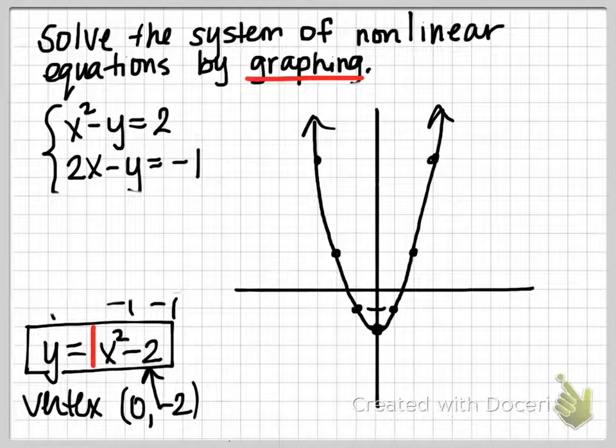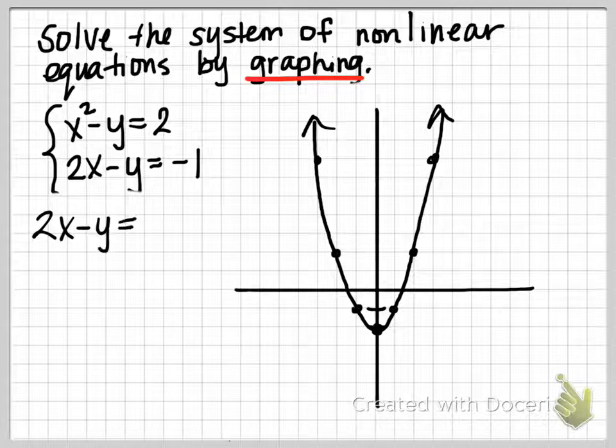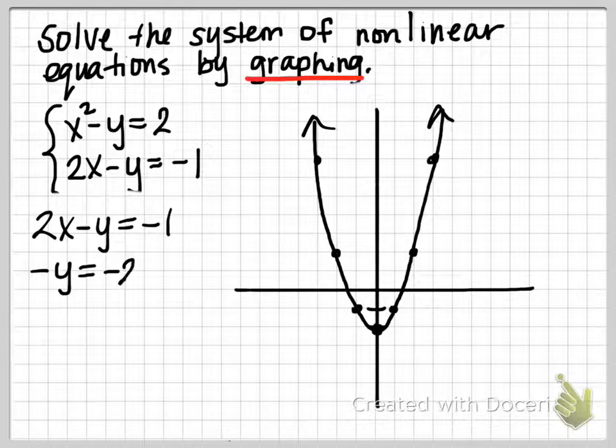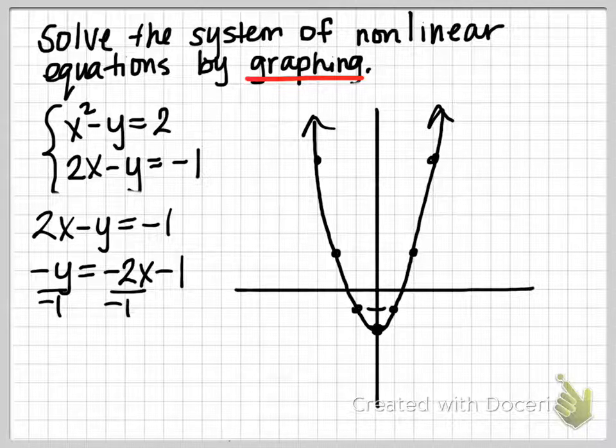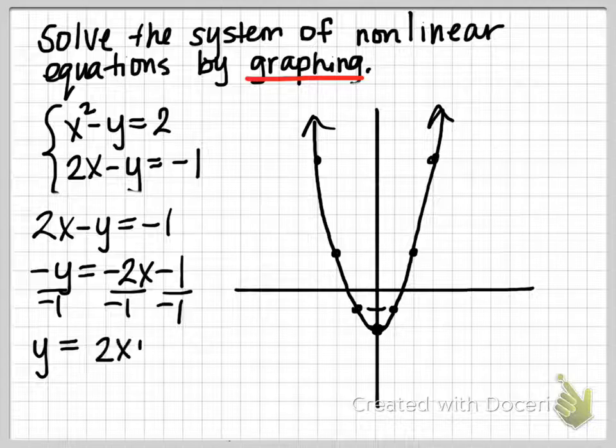Next, we want to graph the line. So it would be most useful if this line, 2x - y = -1, was in slope intercept form. So same idea, I'll solve for y by subtracting 2x and then dividing by negative 1. y = 2x + 1.